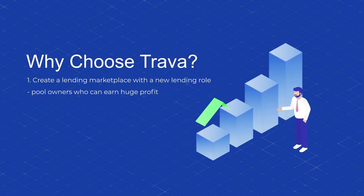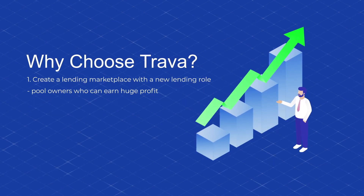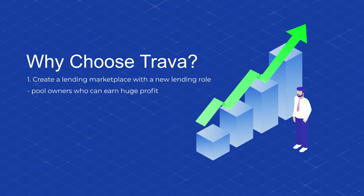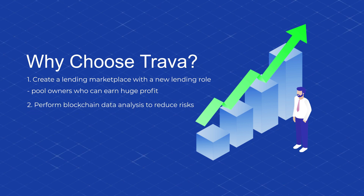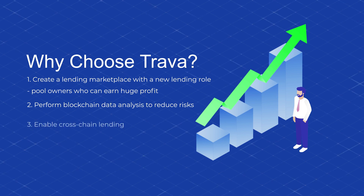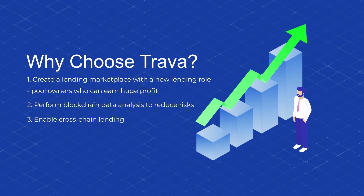Why choose Trava? First, you can create a lending marketplace with a new lending role — pool owners who can earn huge profit. Second, you can perform blockchain data analysis to reduce risks. And third, you can enable cross-chain lending.